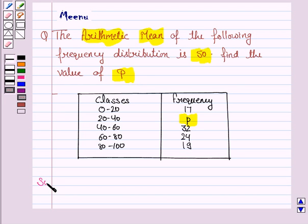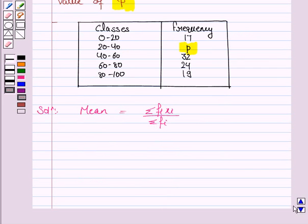Let's now move on to the solution. The mean of the frequency distribution is given by the formula summation FI XI upon summation FI, where FI is the frequency, XI is the midpoint of the class interval also called as class mark.